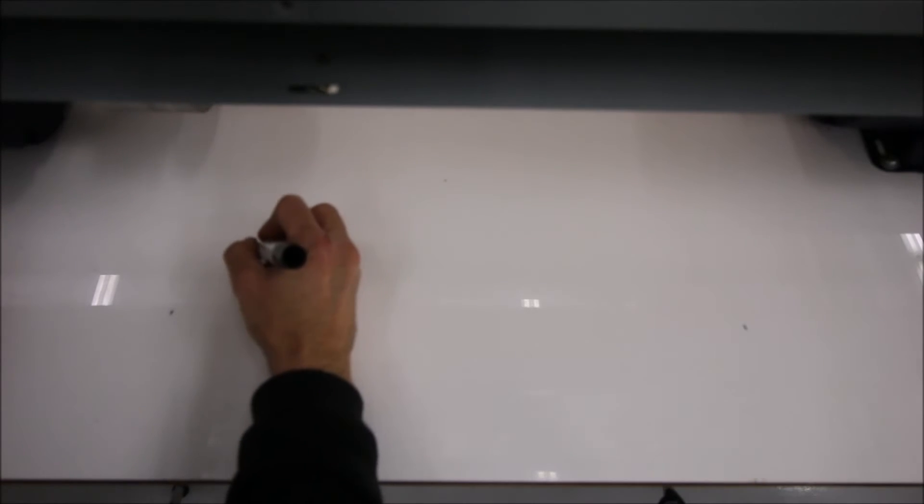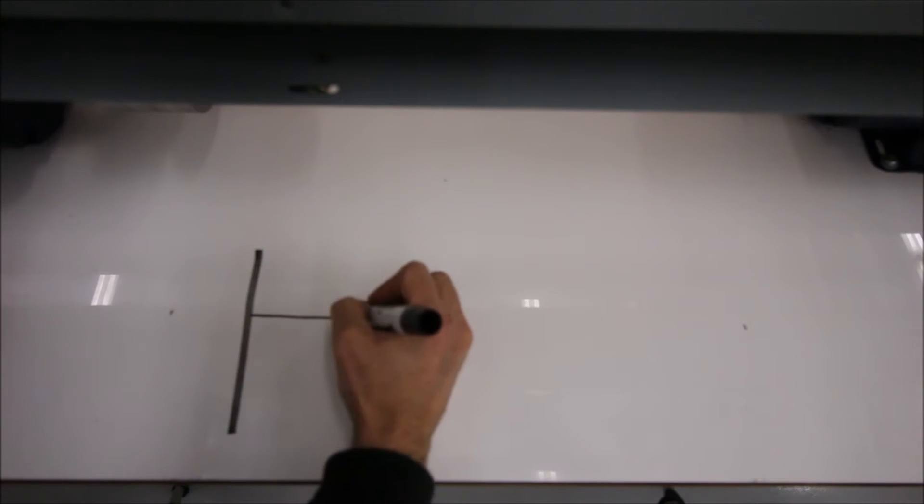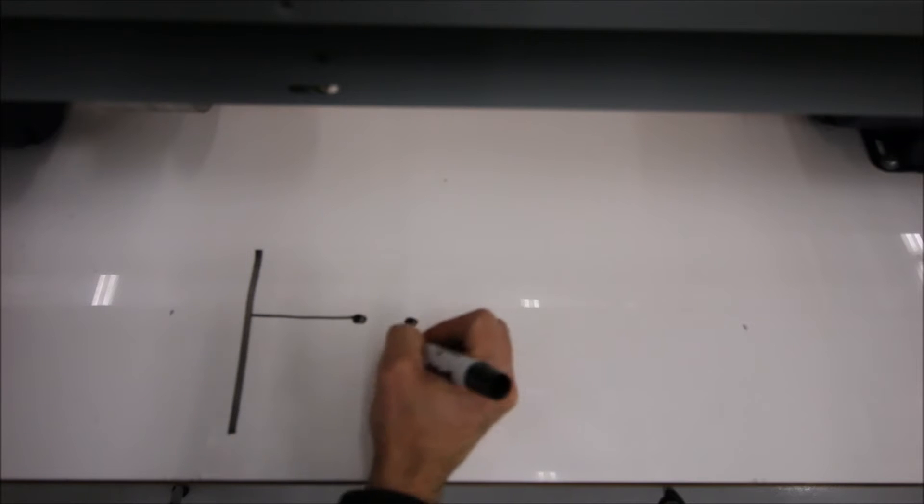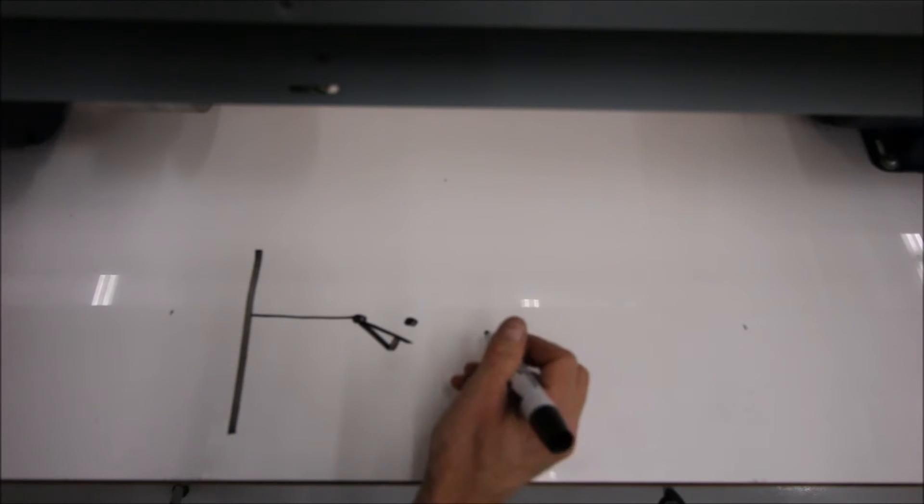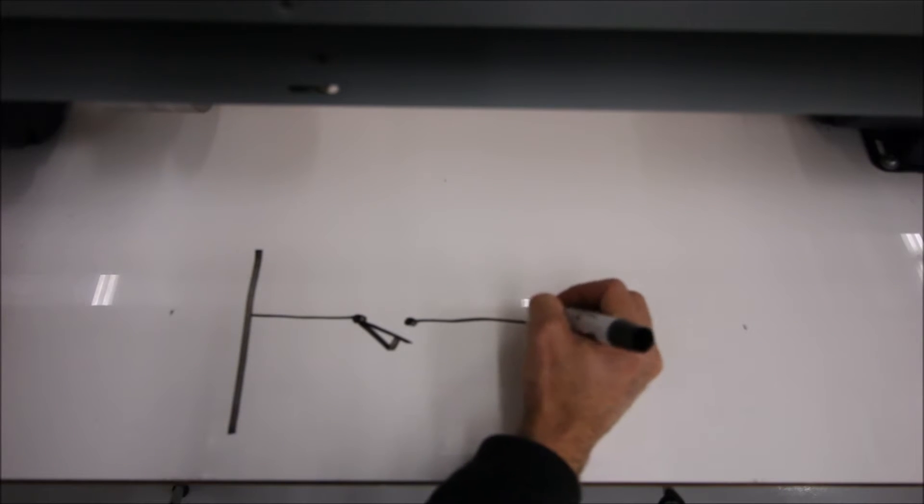Alright guys, so let's start off with the two-wire control. We're going to have line one and we're going to have some type of switch. For this, we're going to use a limit switch, and from there we're going to go to our coil.